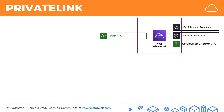AWS PrivateLink is a highly available scalable technology that enables you to privately connect your VPC to services outside your VPC as if they were in your VPC. The important thing here is that traffic between your VPC and the other services does not leave the AWS network. So whenever you see on the exam technology for privately connecting to other services, think AWS PrivateLink.